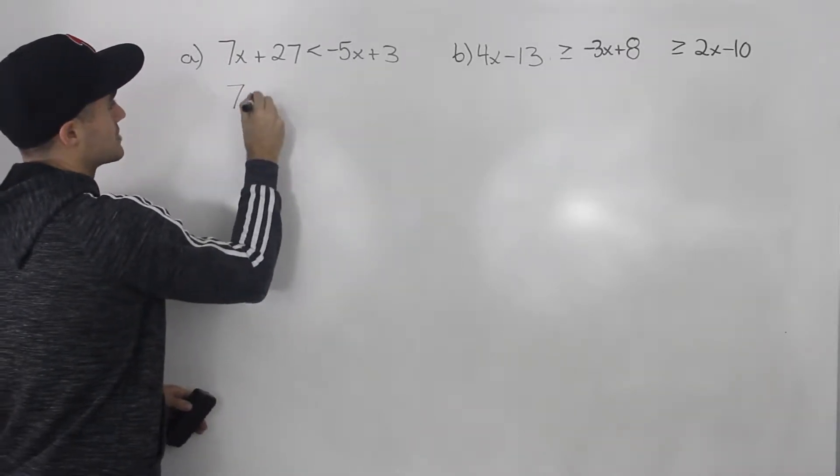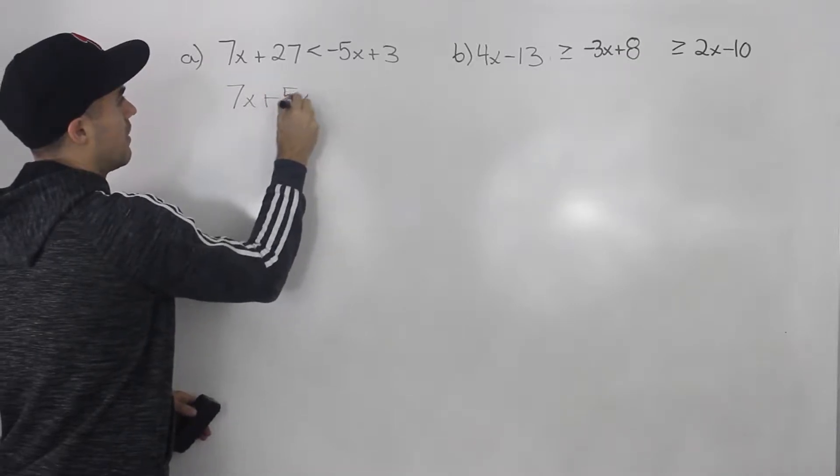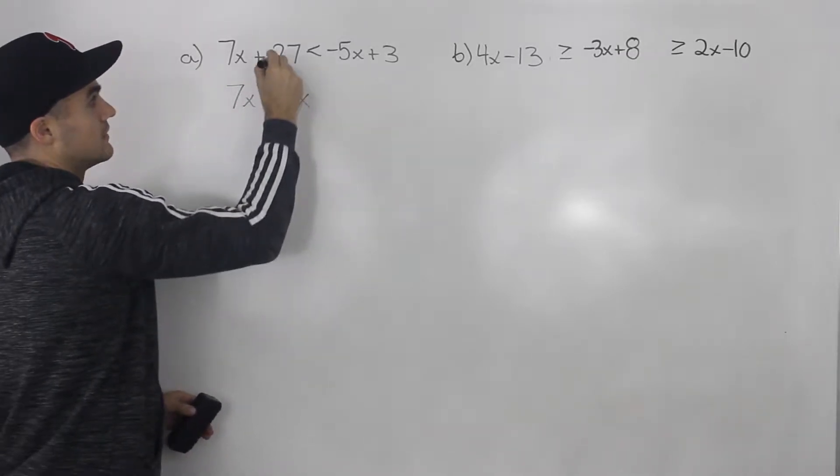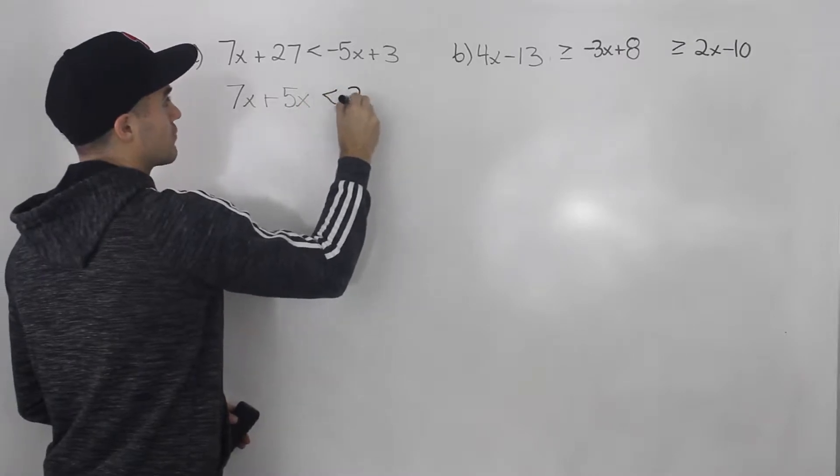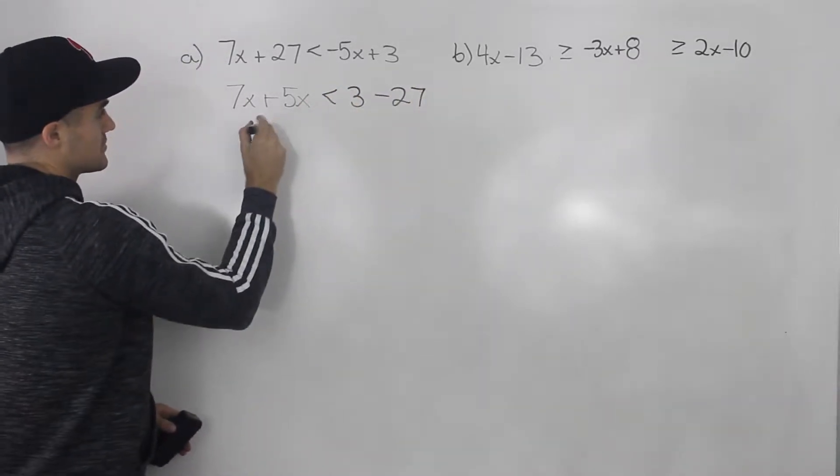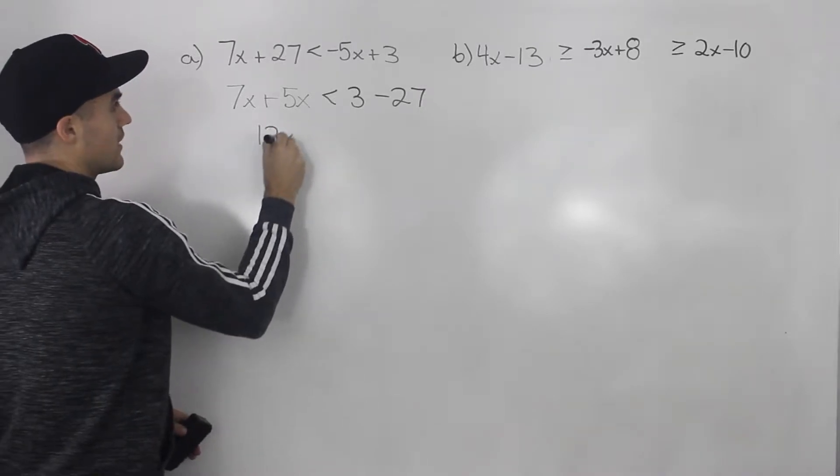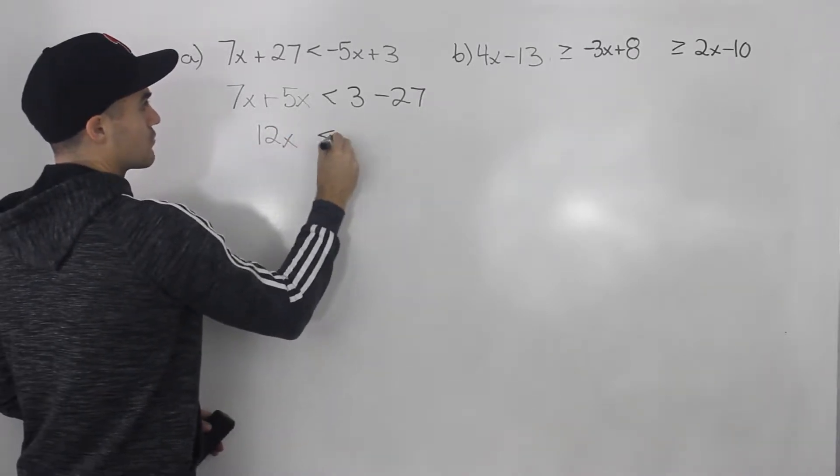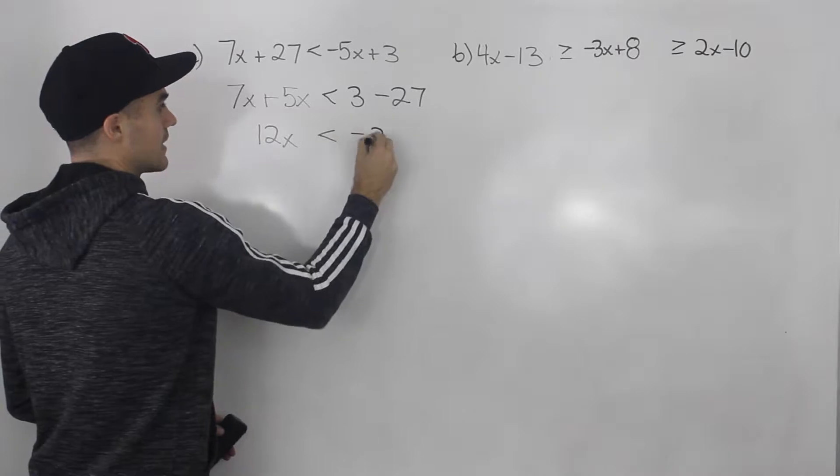So we'd have 7x plus 5x on the left side, then we could bring this 27 over. So we'd have 3 minus 27. 7x plus 5x, that gives us 12x. And then 3 minus 27, that gives us negative 24.